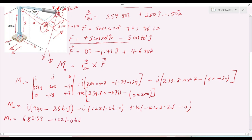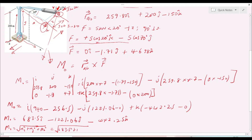This gives the moment M_O equal to 683.5i − 1221.06j − 442.25k kilonewton·meters. To find the resultant magnitude: M_O = √(683.5² + 1221.06² + 442.25²), which evaluates to approximately 1467.56 kilonewton·meters. That is our final answer.